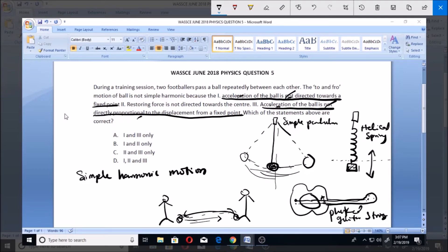So these two things that makes something a simple harmonic motion, that makes a simple pendulum, a helical spring, and a plucked guitar a simple harmonic motion, here they had put 'not,' 'not.' So in that case,